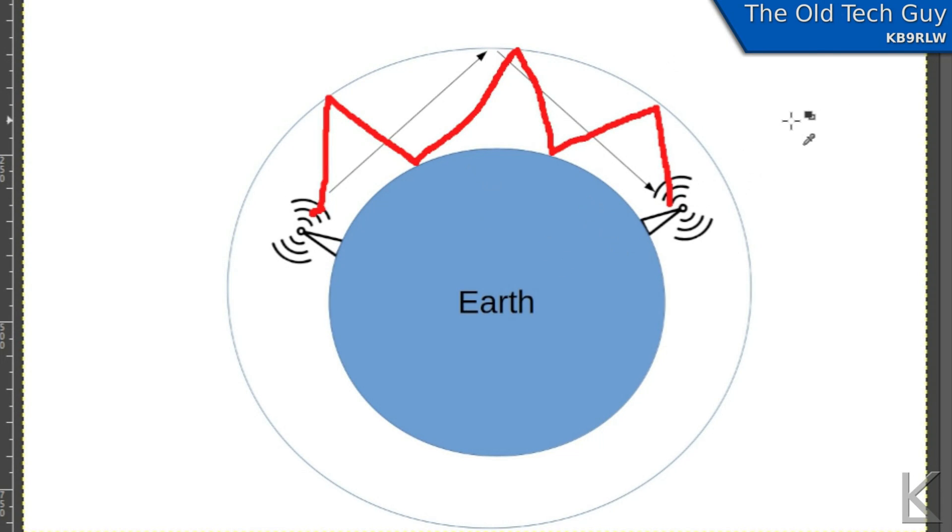But like I said, this is simplified. Alright, so let's consider this to be a direct path. The shortest distance between this station and that station across the surface of the earth, and we've got propagation, the signal's getting here, that short path.